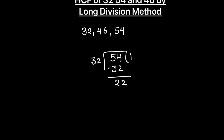In the next step, this remainder 22 becomes our new divisor, and 32, which was our previous divisor, becomes our new dividend. So we divide 32 by 22. 22 times 1 is 22, and we subtract to get the remainder.